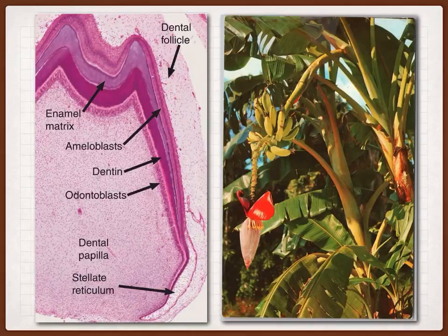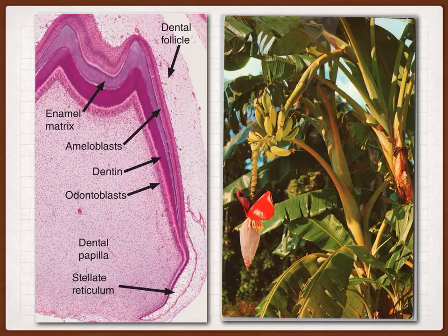As we said in the video of the amalgam restoration, the ameloblasts — the cells responsible for the formation of enamel — are like banana trees. Banana trees give birth to bananas, and when we harvest the bananas, the banana trees will just die. The exact same thing happens for the ameloblasts: when they give birth to enamel, they will then just die.